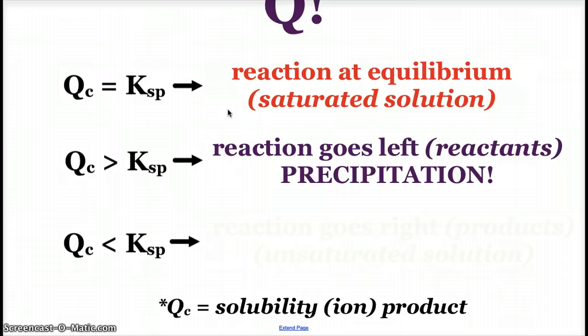And just like in the past, when Q is greater than K, the reaction would shift to the left, towards the reactants, which in this case would be the solid, solute. So yes, we would see precipitation.